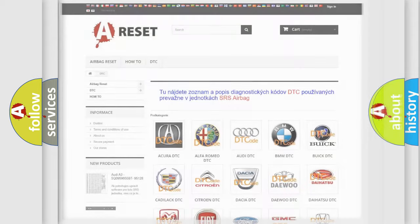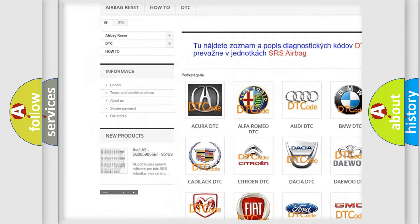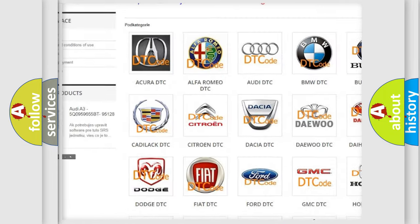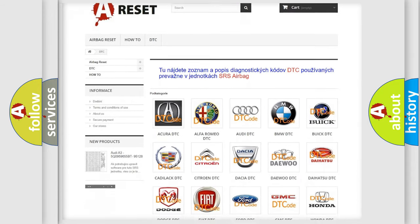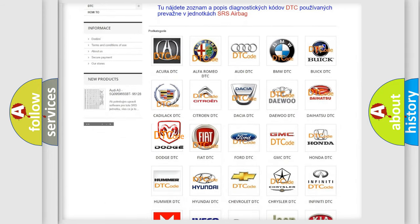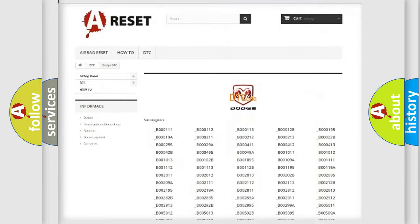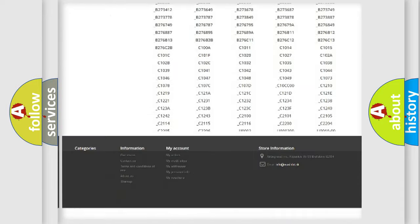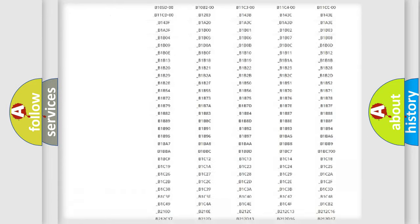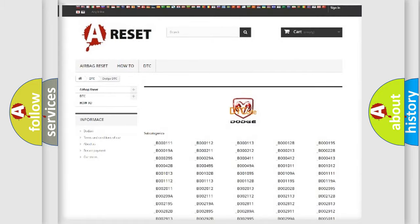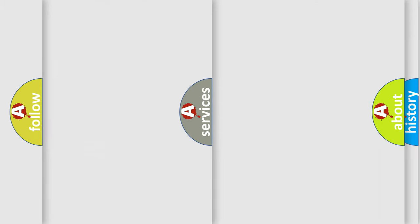Our website airbagreset.sk produces useful videos for you. You do not have to go through the OBD2 protocol anymore to know how to troubleshoot any car breakdown. You will find all the diagnostic codes that can be diagnosed in Dodge vehicles, and many other useful things.